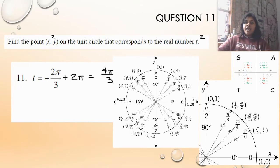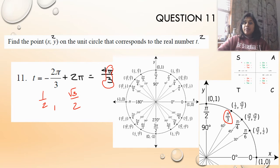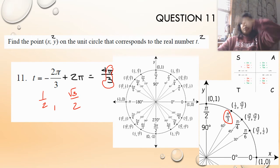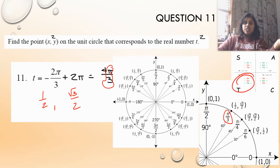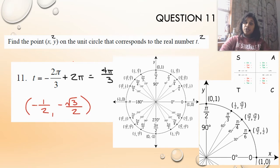If I just have the first quadrant memorized, I go over to π over 3 because that's my root, and write down that coordinate point. Then I check my ASTC: 4π over 3 is between 3π over 3 (which is 180°) and 6π over 3 (which is 360°), so I'm in quadrant 3. Quadrant 3 means tangent is positive, so both cosine and sine must be negative. Confirmed.